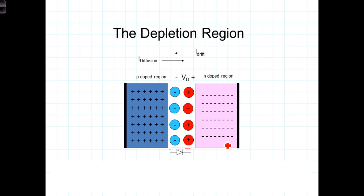At the time the two different regions are created during the manufacturing process, electrons from the n-region, where there is a high concentration of unbound electrons, diffuse into the p-region and fill vacancies in the half-filled orbitals to form covalent bonds. Equivalently, we can think of holes from the p-type region diffusing to the n-region to form bonds with free electrons.